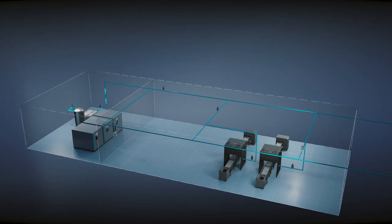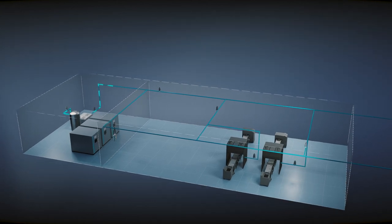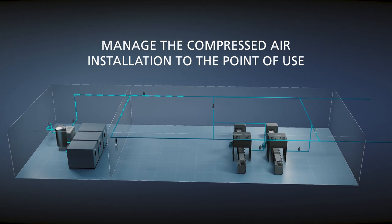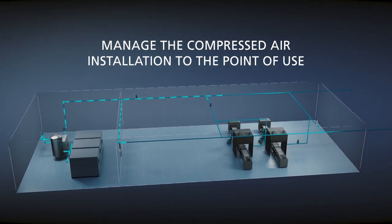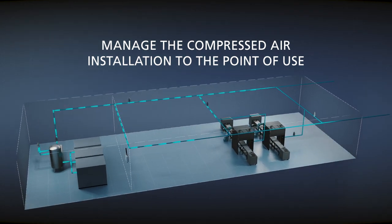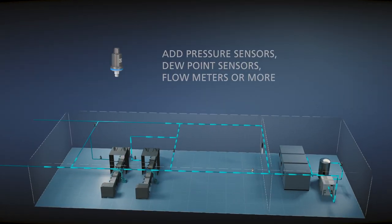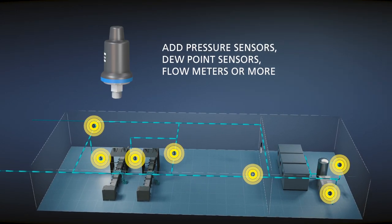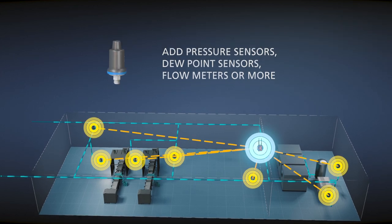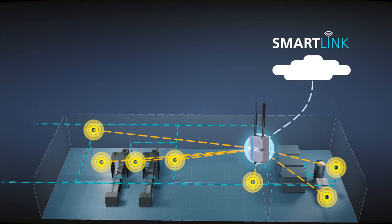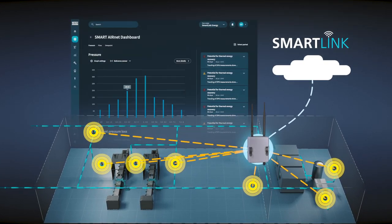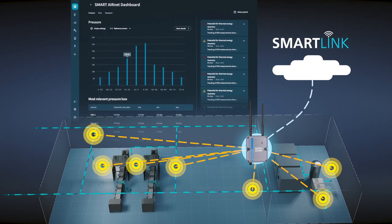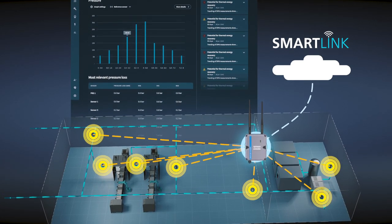Thanks to SmartAirNet, you can monitor your entire compressed air installation from the heart of your compressor to the point of use. SmartAirNet adds smart and wireless sensors to your AirNet installation and visualizes this continuous stream of valuable information in SmartLink. As we can connect any sensor in your installation, it offers data and insights into your full compressor installation.